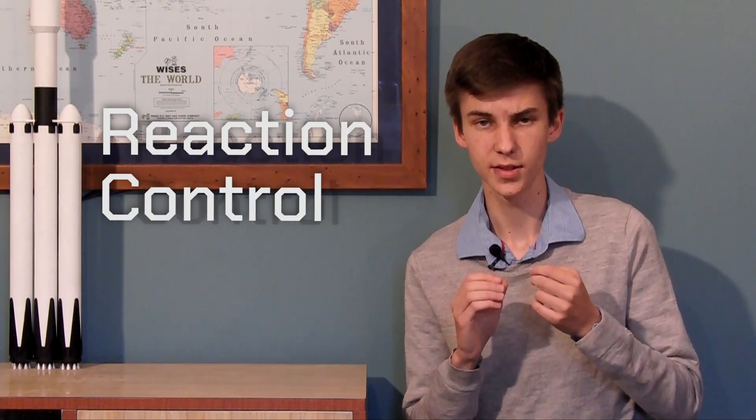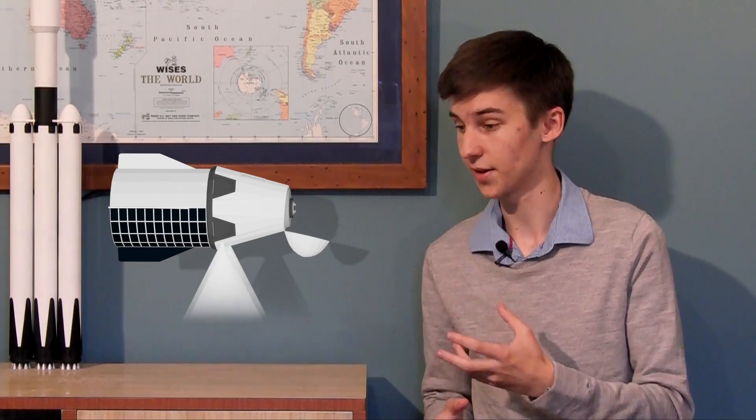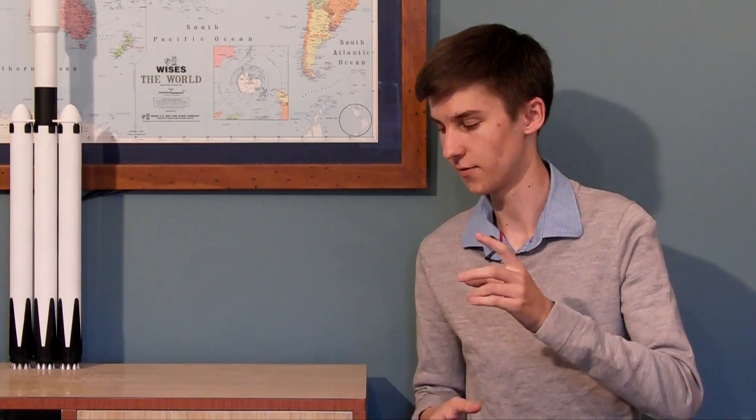We control our spacecraft precisely using reaction control systems. What a reaction control system is, is just a set of small thrusters around the spacecraft. And it is called a reaction control system because of Newton's third law of motion, which is often phrased as every action has an equal and opposite reaction. Here's the way I like to think of it. It's as if we've got two blocks on the table here, squished a spring between them and then let go. They are both pushed apart by the spring.